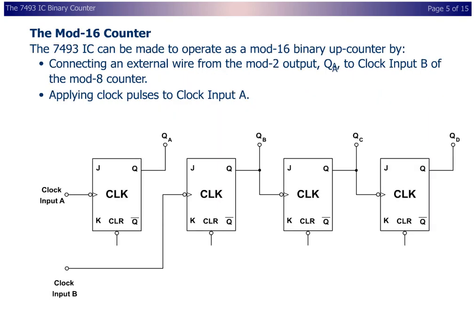The mod-16 counter. The 7493 IC can be made to operate as a mod-16 binary up-counter by connecting an external wire from the mod-2 output, QA, to clock input B of the mod-8 counter, or by applying clock pulses to clock input A.